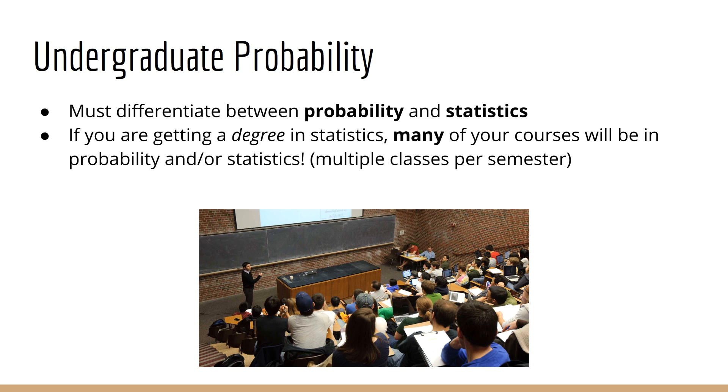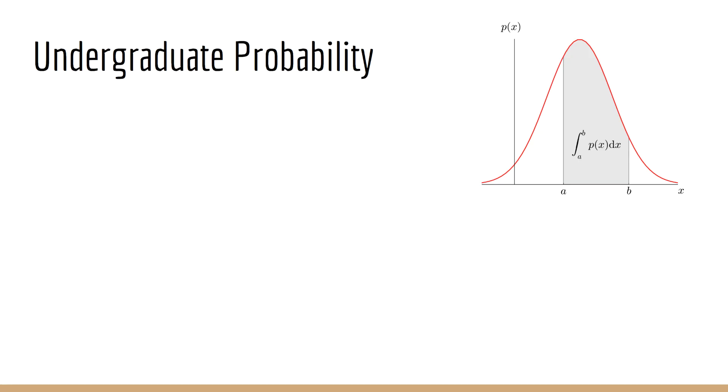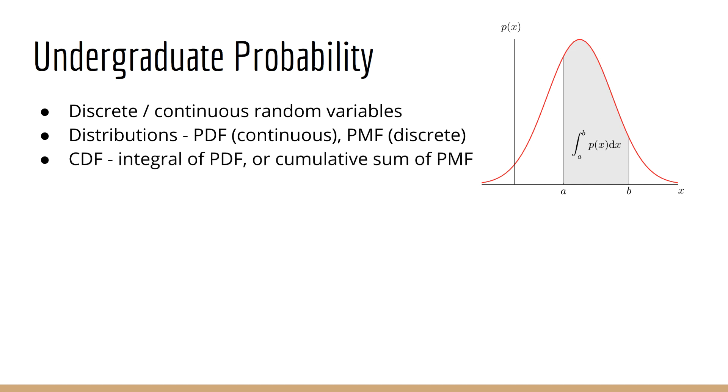In this lecture, however, we'll focus only on those courses that would teach you the fundamentals that you would need for understanding machine learning. Let's start with probability. In a college-level probability course, you would learn about topics such as the difference between discrete and continuous random variables, probability distributions, the PDF for continuous random variables, and the PMF for discrete random variables. You'll learn about the CDF, which is the integral of the PDF or the cumulative sum of the PMF. You'll learn about conditional, joint,